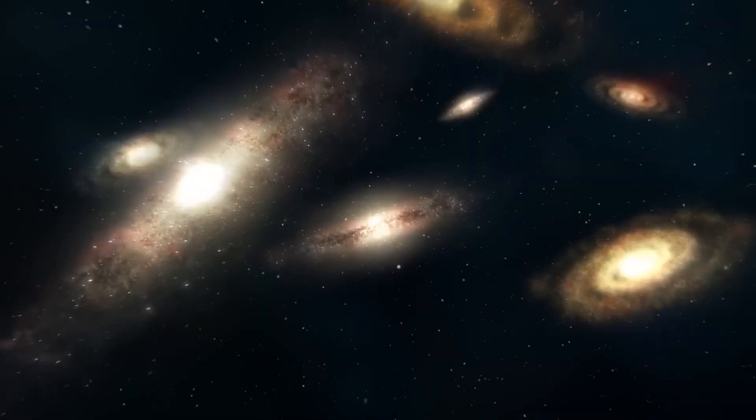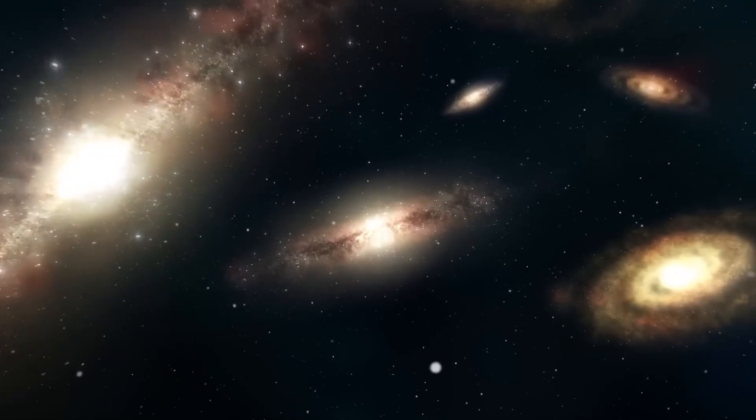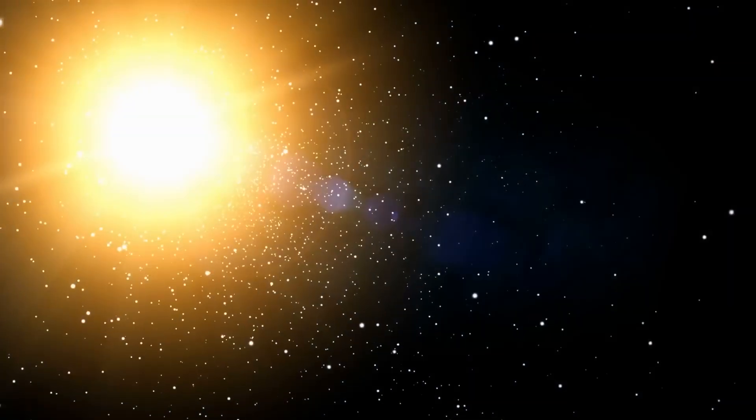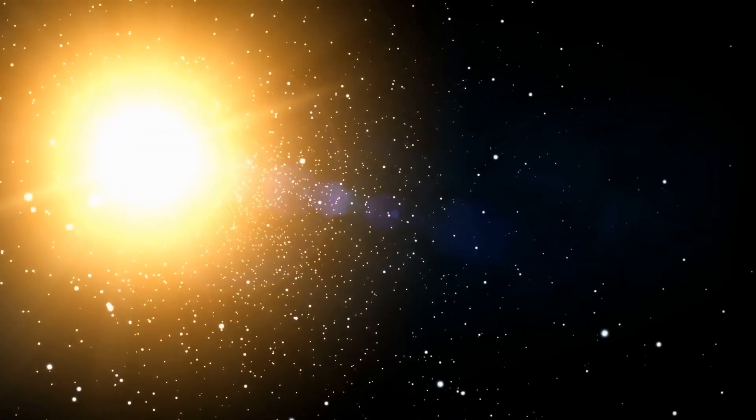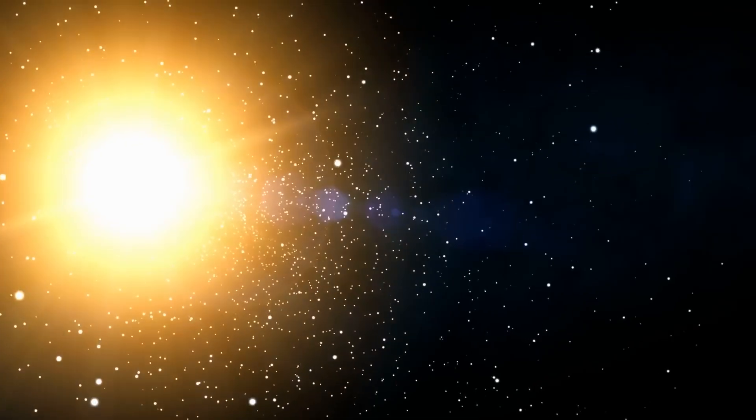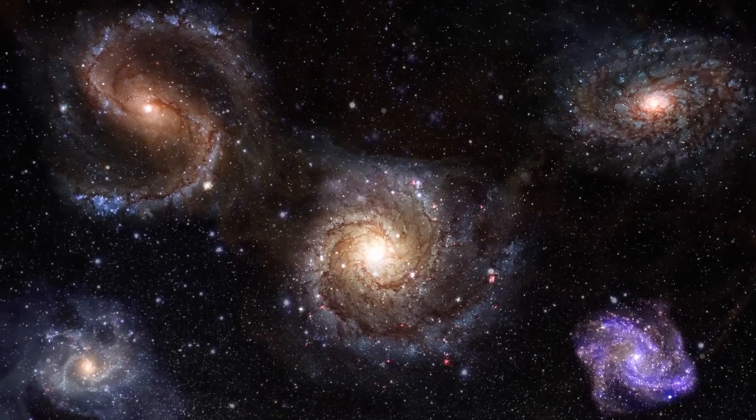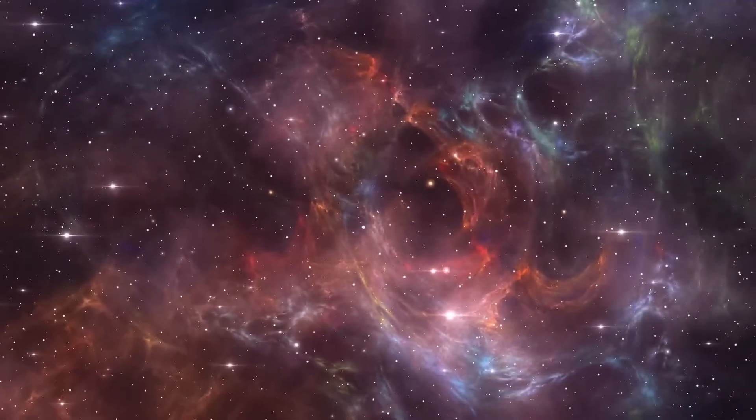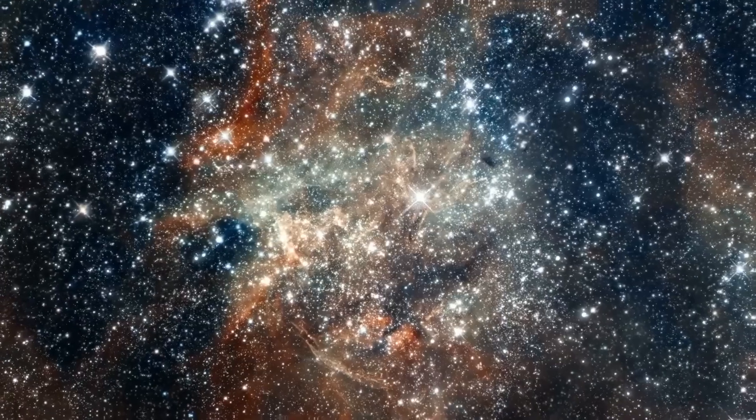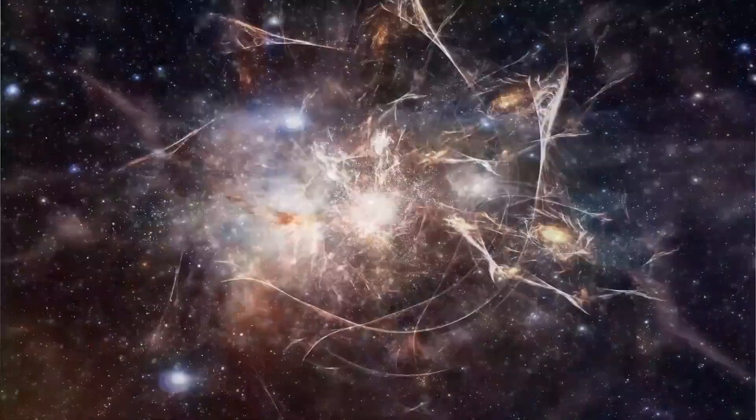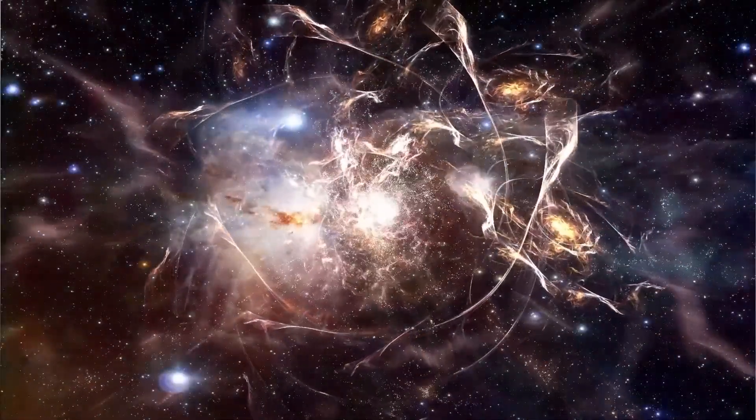It remains uncertain exactly when the first galaxies formed. Researchers have not been able to determine this so far. The only thing that is clear is that initially, there may only have been single stars or groups of stars, which eventually joined together to form larger and larger accretions, until dwarf galaxies developed. The small galaxies encountered other galaxies and gradually grew.